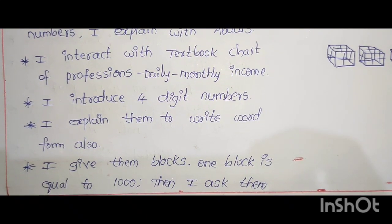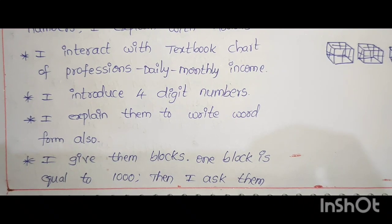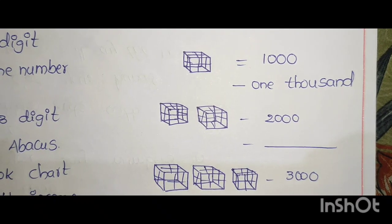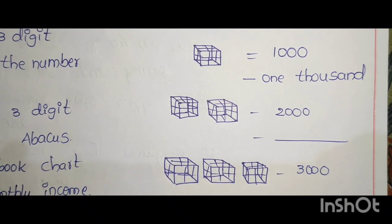I give them blocks. One block is equal to 1000. Then I ask them: 1 block is 1000, 2 blocks 2000, and they write in dashes. 3 blocks 3000. Like that.